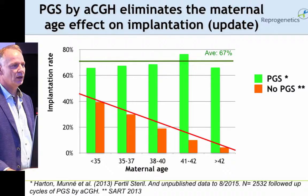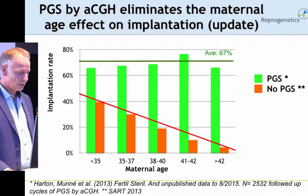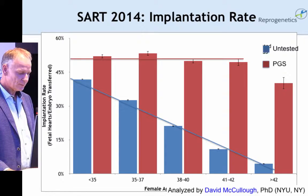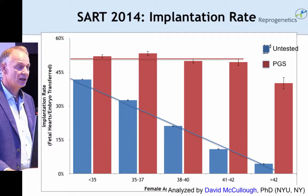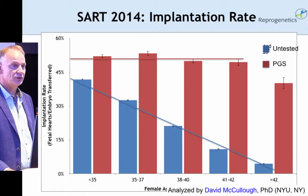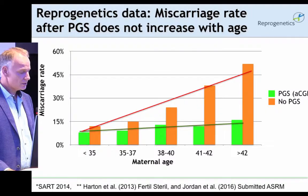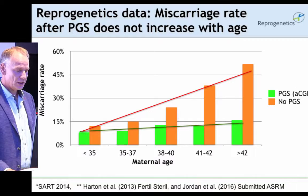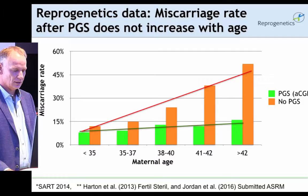What we see now is that if you transfer a euploid embryo, they implant equally well at any age, at least up to 42 years of age. This is data from Reprogenetics published in 2013, and David McCullough will present this data also from SART 2014, thousands of cases, finding exactly the same. Also, we don't see an increase in spontaneous abortions when we do PGS. Instead, if you don't do PGS, you see the typical increase in miscarriages.